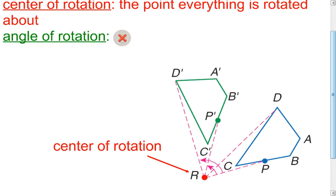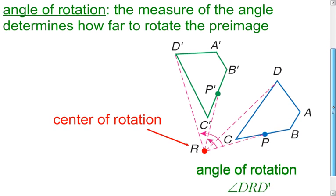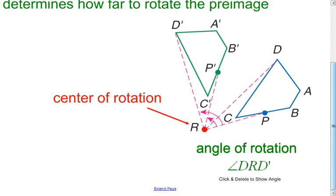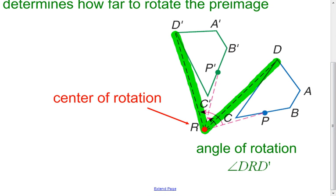And then you have your angle of rotation. Well, that's the measurement of the angle that we're rotating from pre-image to image. So in this case, when you look at it, my angle of rotation, or one example of the angle of rotation, would be angle D-R-D prime. And just to kind of highlight that, I've shown it here. It shows you where D starts and where D prime will end up at.